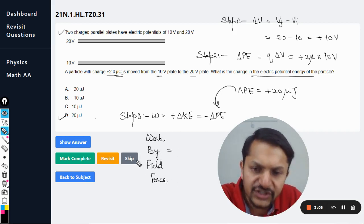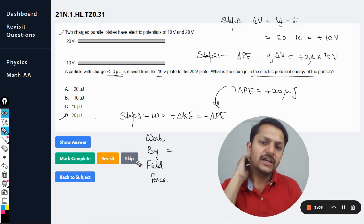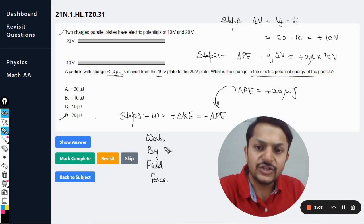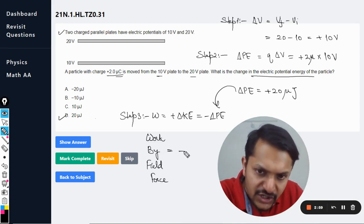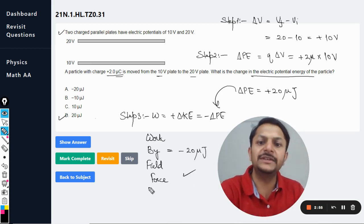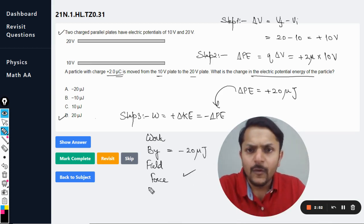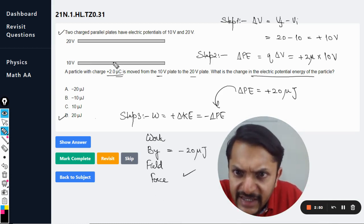and so the work done by field force - it is not the external agency, it is the field force, like the charge should be moving automatically like that - so the work done by the field force is negative of this, so it will be negative 20 micro joule. So the negative work is done by the field.